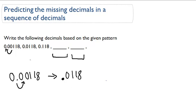And then what happens from this number to this number? We go 0.0118, and we go to 0.118. Again, it looks like the decimal point is moving one place to the right.